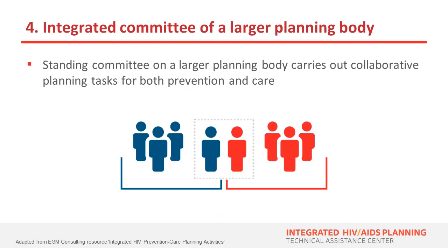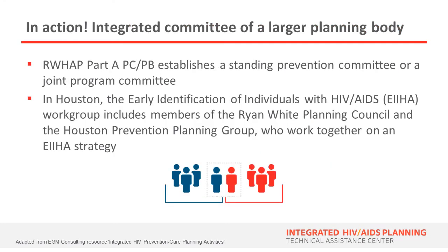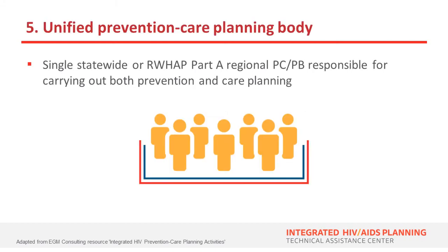Fourth, the next model involves the development of an integrated committee of a larger planning body. With this structure, there's a standing planning committee that carries out collaborative planning tasks for both prevention and care. For example, a Ryan White Part A Planning Council might establish a standing prevention committee or a joint program committee. In Houston, the Part A Planning Council established an early identification of individuals with HIV work group, which includes members of the Part A Planning Council and the Houston Prevention Planning Group who work together on early identification strategy.